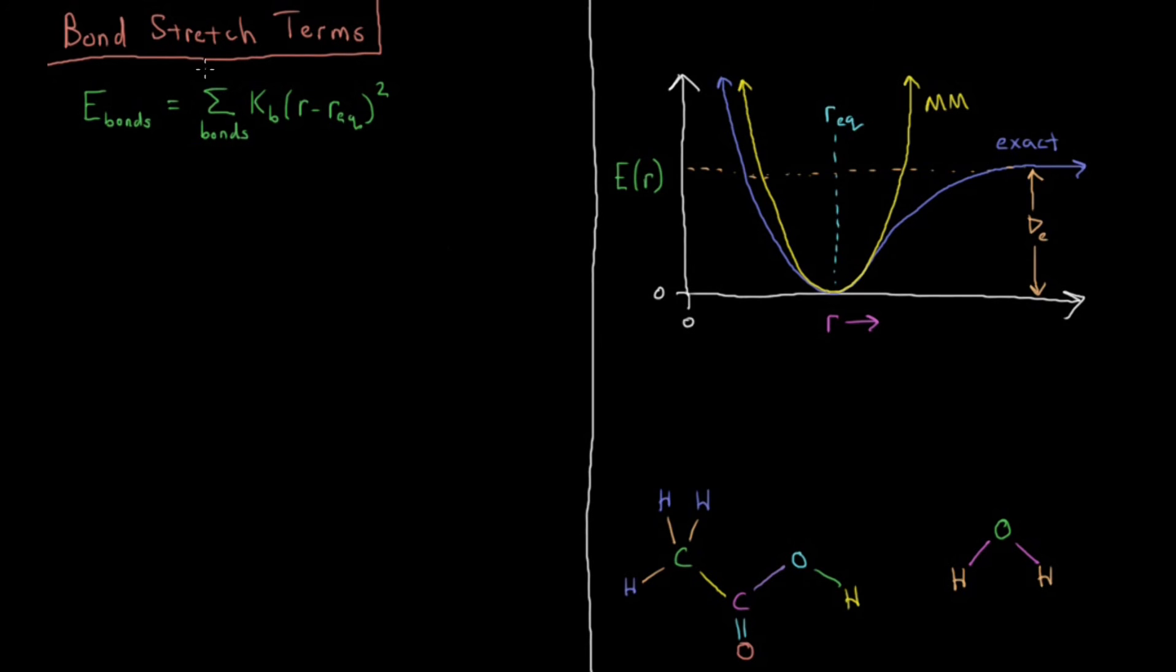We've already had a preview slash spoiler of the bond stretch term in molecular mechanics as defined in the parameters video, but let's go ahead and define again what the energy of the bond terms are in molecular mechanics. So in AMBER specifically, this is equal to the sum over all the bonds, which we have to predefine for our system, of the bond force constant K_B times the bond distance minus the equilibrium bond distance squared.